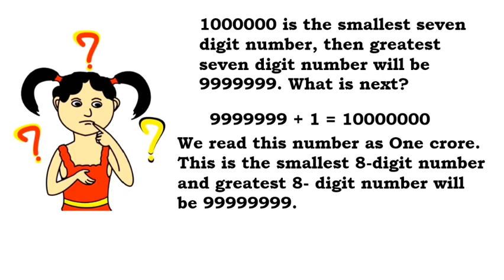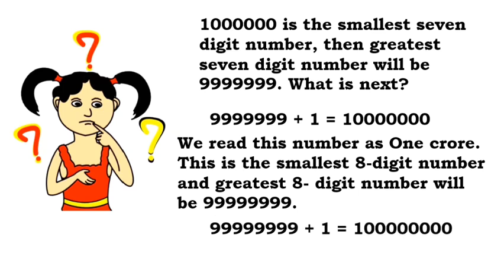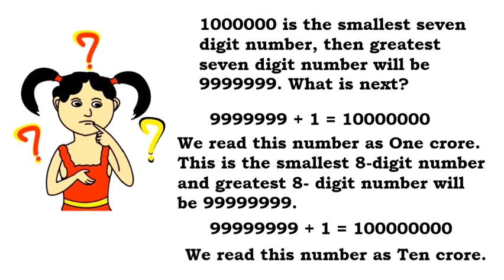The greatest 8 digit number will be 9,99,99,999. And 9,99,99,999 plus 1 equals 1 followed by 8 zeros. We read this number as 10 crore.